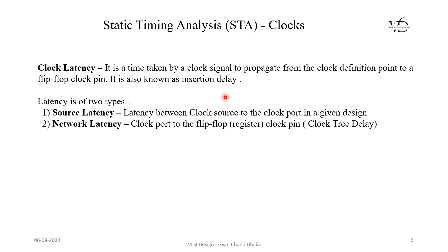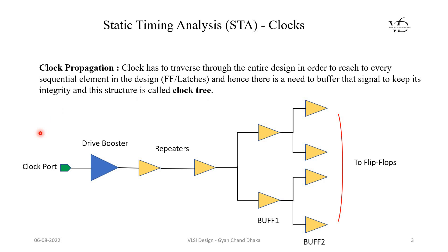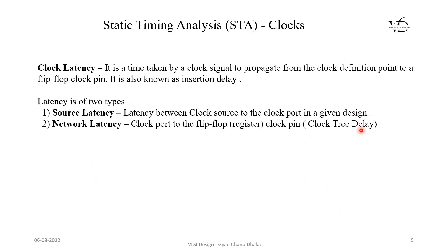Now let's see the next important property of the clock: clock latency. Clock latency is nothing but the time taken by a clock signal to propagate from the clock definition point to a flip-flop clock pin, and it is also known as insertion delay. So where we saw the clock definition point in the previous slide, the delay from there to the clock pin of a particular flip-flop is called clock latency.